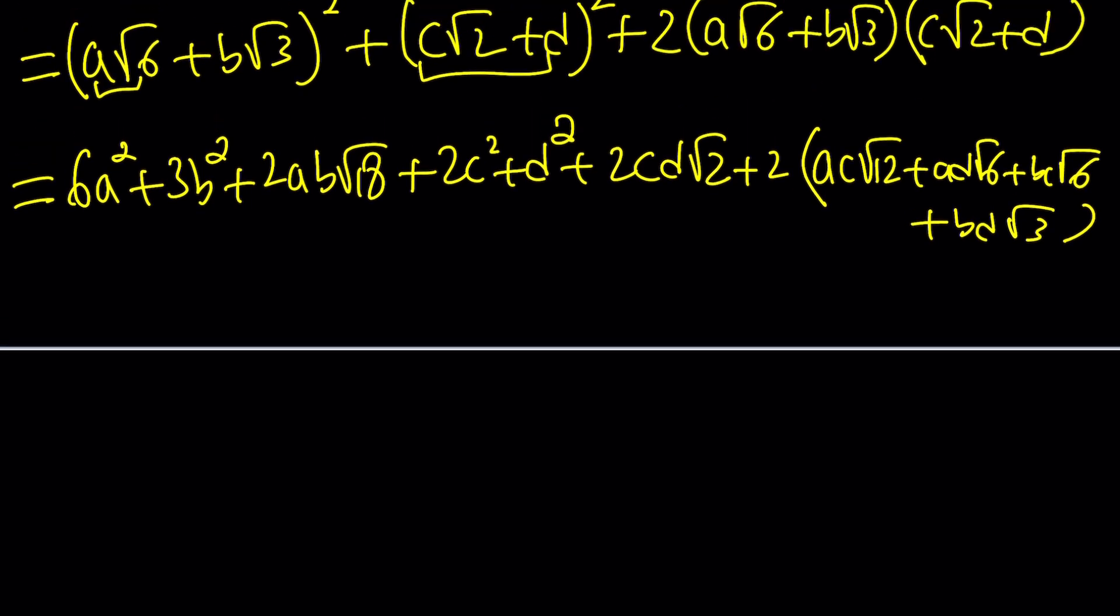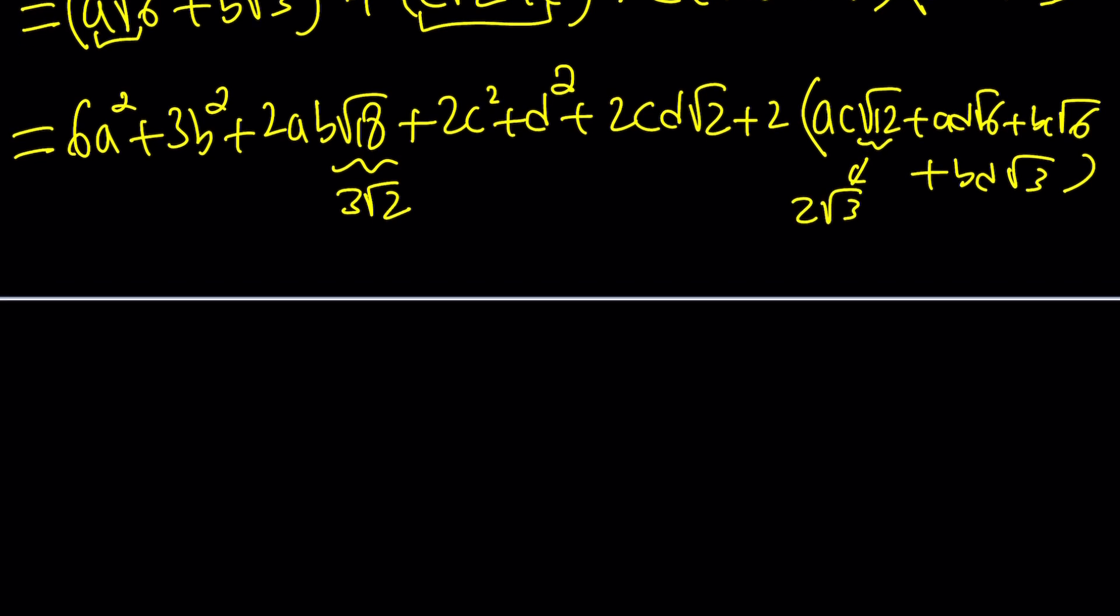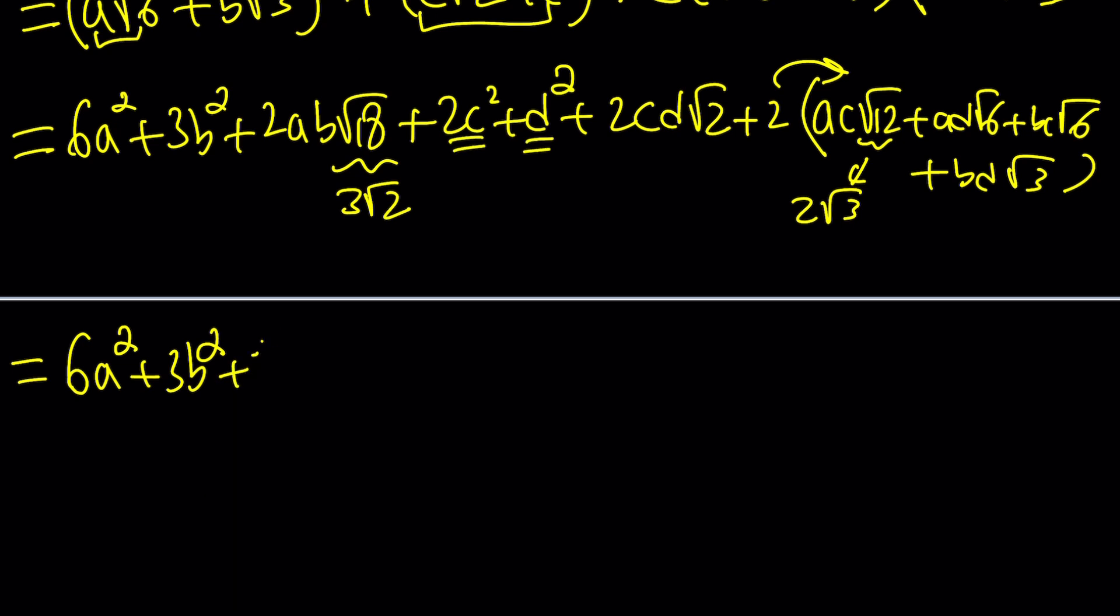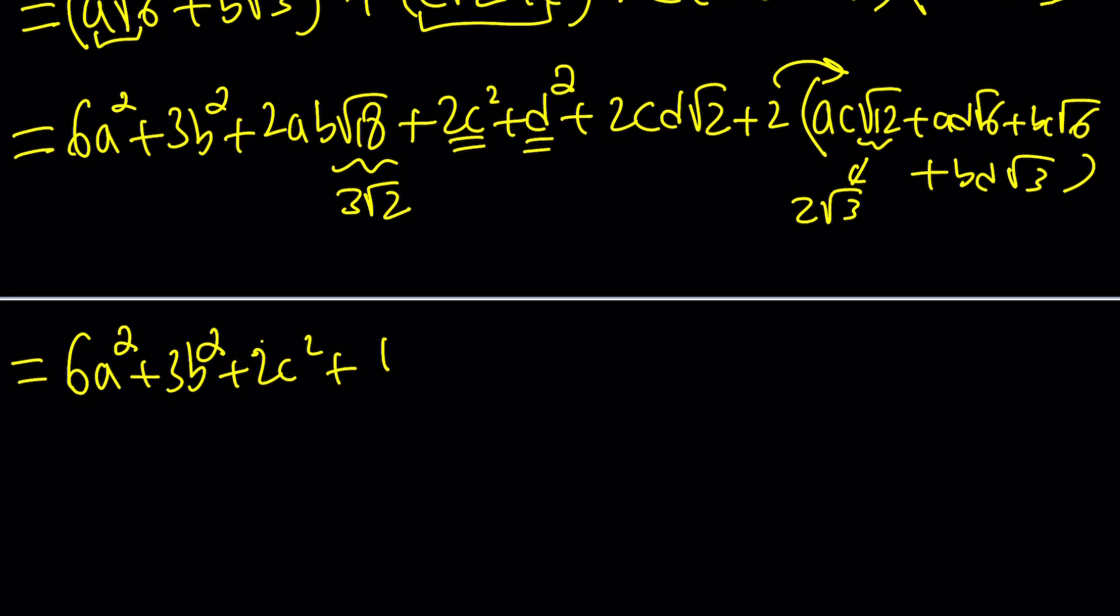Here's what we need to do next: simplify these. Root 18 is 3 root 2, root 12 is 2 root 3, and don't forget to distribute the 2. So we get 6a squared plus 3b squared, and then bring these two, plus 2c squared plus d squared.